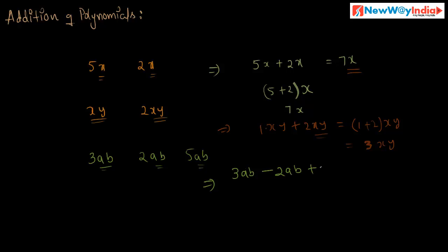Consider: 3ab minus 2ab plus 5ab. These are all like terms. To add them, you consider the numerical coefficients: 3 minus 2 plus 5. The resultant will be a like term with literal factor ab. 3 minus 2 equals 1, plus 5 equals 6ab. Therefore, the sum of two or more like terms is a like term whose numerical coefficient is the sum of the numerical coefficients of the given terms.